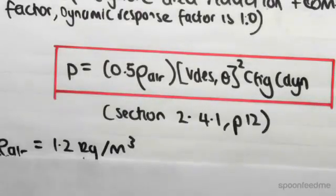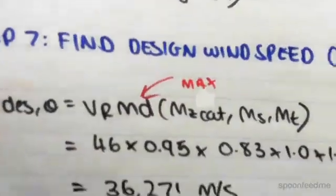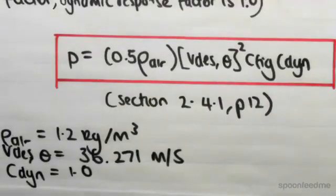We also know that the design wind speed is 36.271 meters per second. We found that in the previous video. And the last thing we know is the dynamic factor is 1.0.